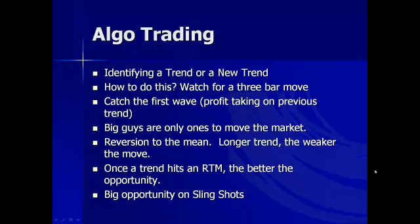What we're trying to do in algo trading is identify a trend or a new trend. Basically, you're going to watch for a three-bar move, and I'm going to show you this with both the original Futures Trading Secrets system and with the candlestick program introduced in the last couple of weeks. Your goal is to catch the first wave. The first wave of a reversal trade usually occurs on the profit-taking of a previous trend — downtrend, retracement, downtrend, retracement — usually with a divergence, and that first bounce is usually good for two to three points. On a longer trend, we take slingshot trades as the market retraces up to the moving averages. The longer the downtrend lasts, the weaker the final move and the fewer points you'll get.